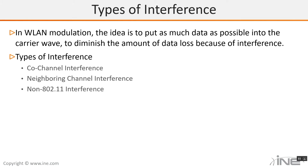When we do spread spectrum modulation, the idea is to put as much data as possible into the carrier wave — put intelligence into the carrier wave — to diminish the amount of data lost because of interference. You'll see later on when we start talking about modulation, differential phase shift keying, differential binary phase shift keying, and differential quadrature phase shift keying, and how that helps with modulation. There are three types of interference: co-channel interference, neighboring channel interference, and non-802.11 interference.